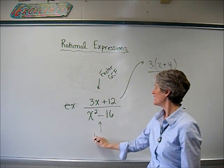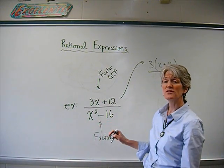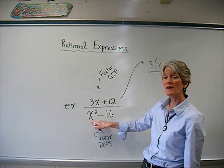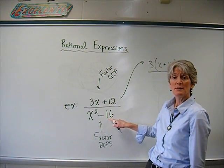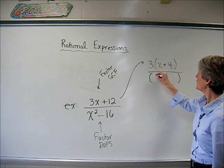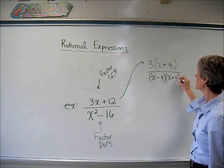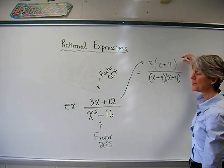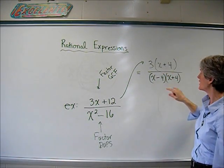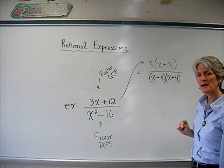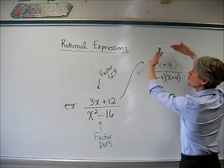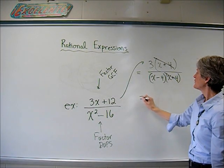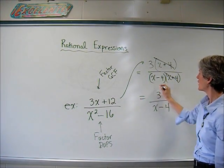Now let's factor the denominator. That's one of our friends — we call that the difference of perfect squares, sometimes called DOTS. x times x equals x squared — that's a perfect square. 4 times 4 equals 16 — that's a perfect square. So that factors as x minus 4 times x plus 4. I've factored the numerator and the denominator. Now I have a blob of things multiplied on top — 3 times x plus 4 — and a blob of things multiplied on the bottom. Since everything's multiplied, I'm allowed to divide. The x plus 4 divides by the x plus 4, and I'm left with 3 over x minus 4. Fully simplified.